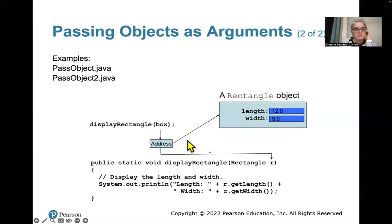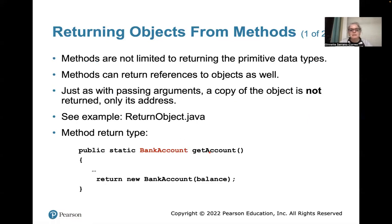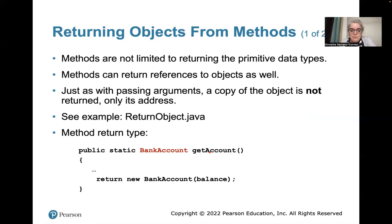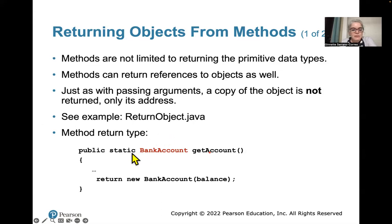Returning objects from methods — methods are not limited to returning primitive data types. You don't have to return just an integer, float, or a character; you can also return objects from a method. Here's an example of a method called getAccount, and this method is going to return a new BankAccount with some starting balance. We're returning an object, and the object being returned is BankAccount. So where we typically put int or float for the return type, now we put BankAccount.